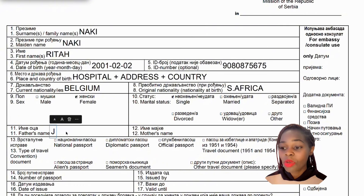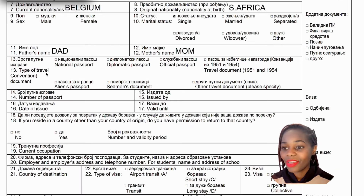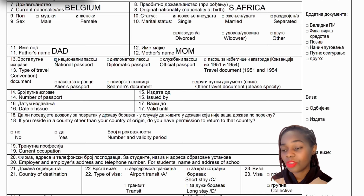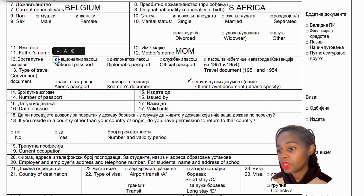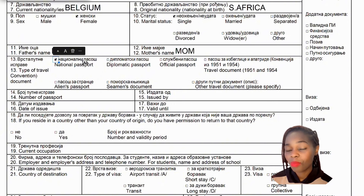Slot number twelve is your mother's name — mention both of her names. Slot number thirteen is the type of travel document you're holding: national passport, diplomatic passport, official passport, or other types. Tick whichever applies. If your document type is not listed, specify it in the other field.